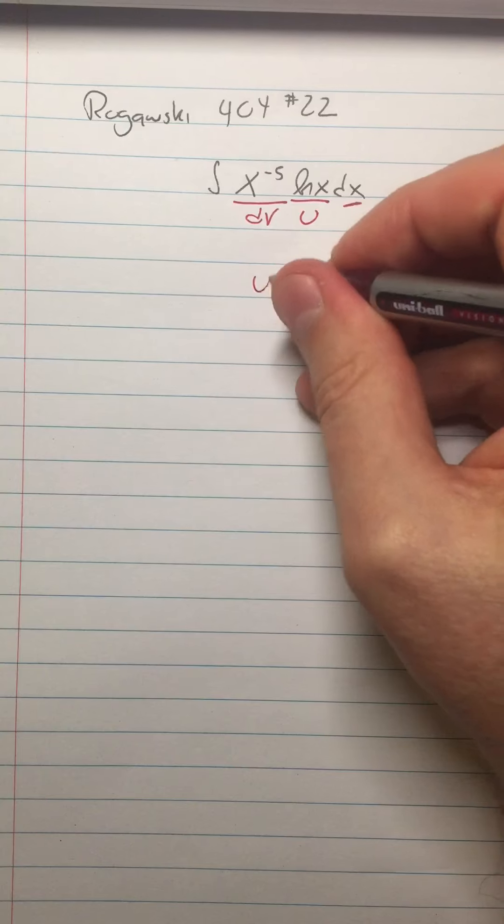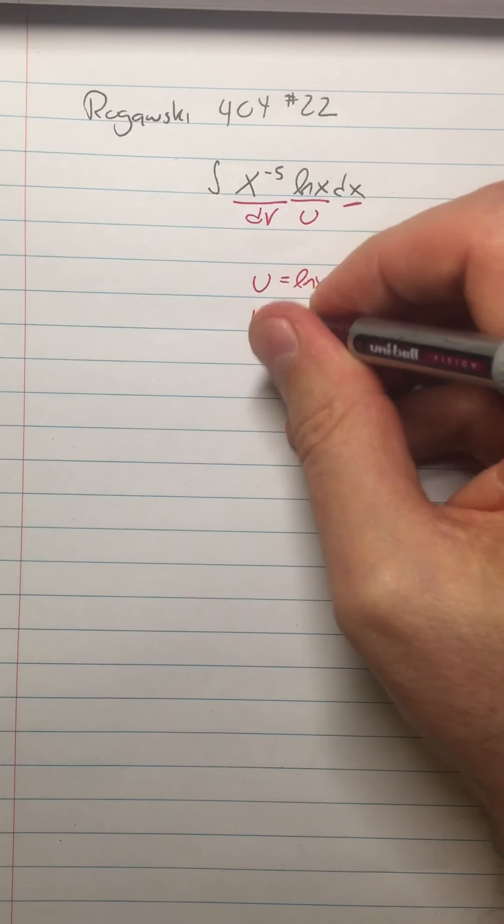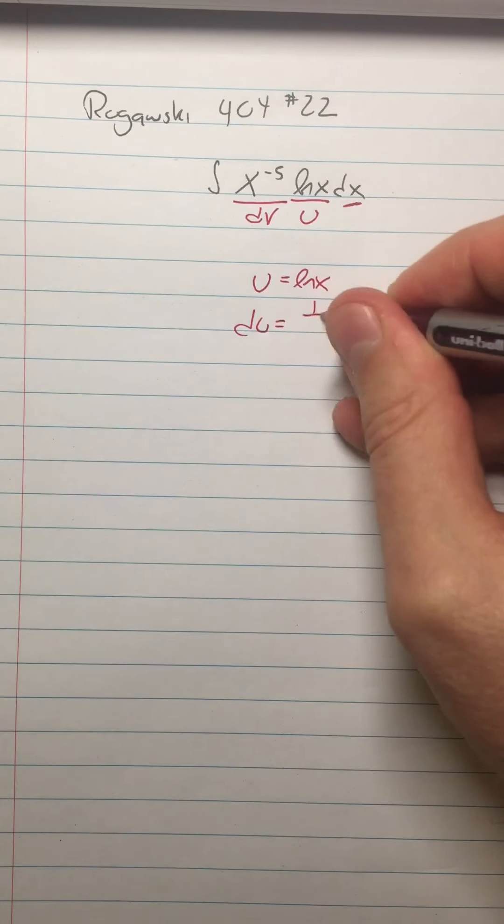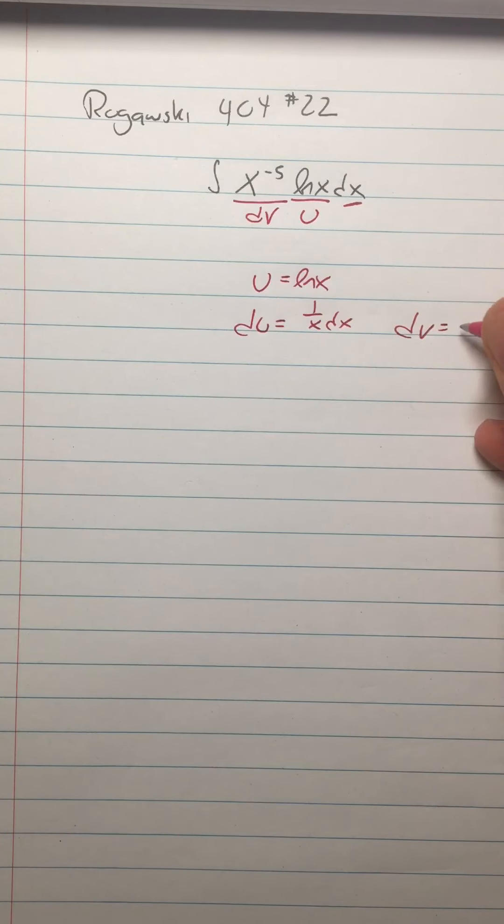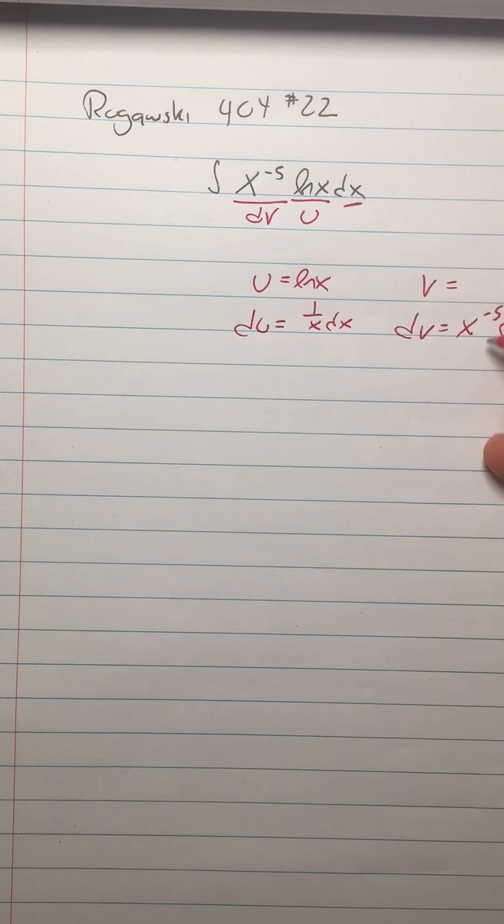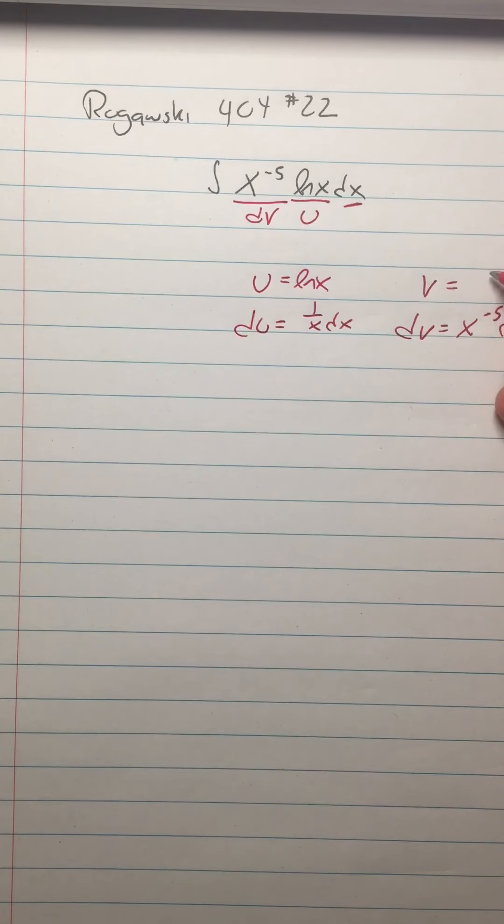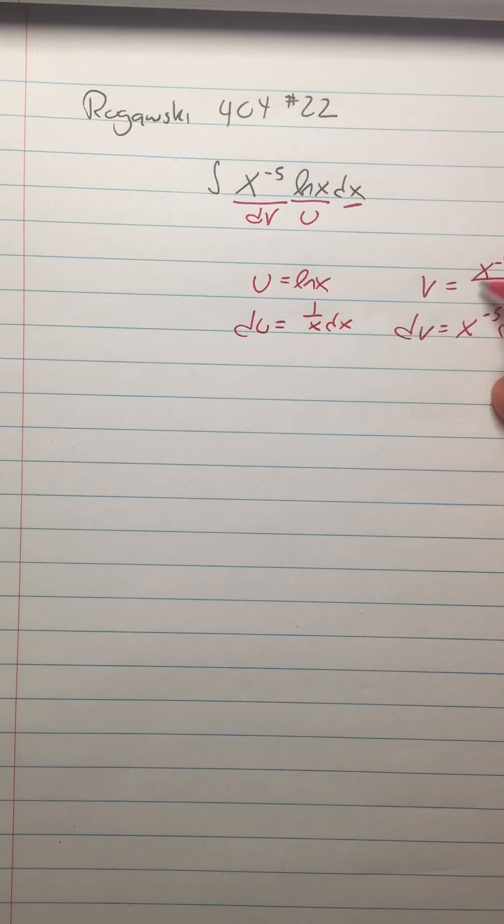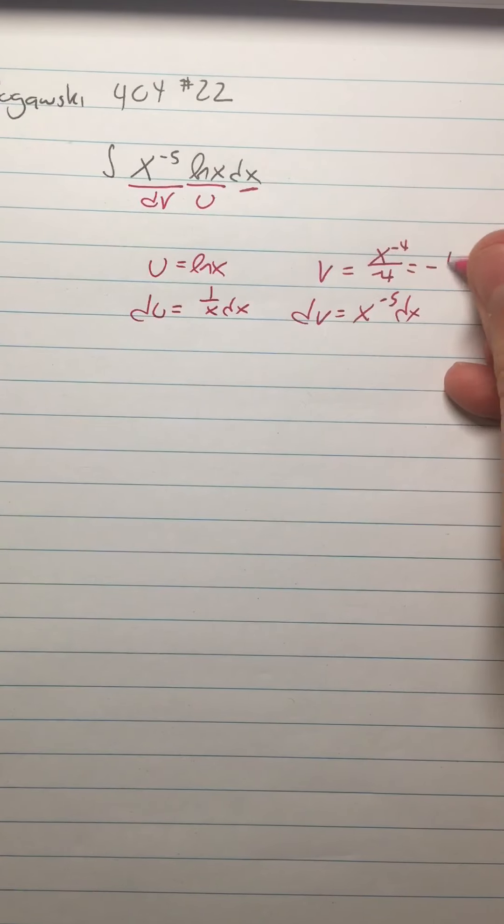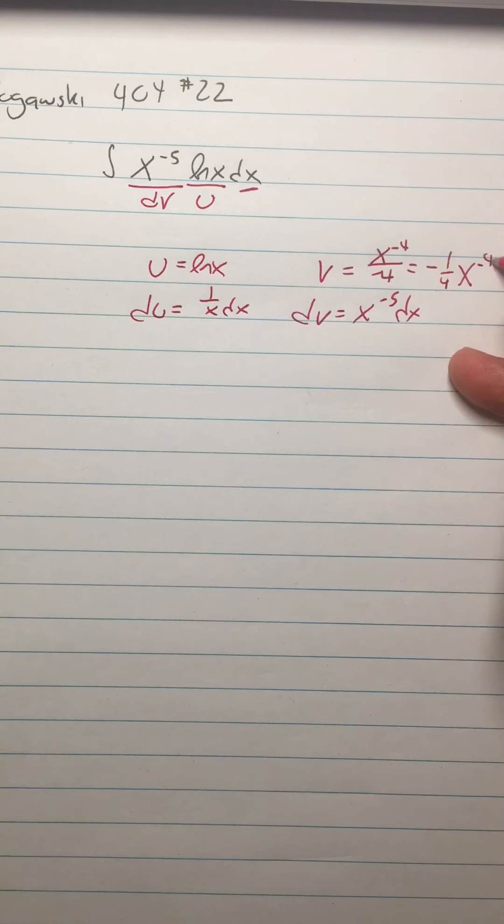So what we're saying is that u is ln x, du is one over x dx, dv is x to the negative fifth dx, and v is, well, I anti-differentiate this, so it's going to be raise the exponent one and get x to the negative fourth over negative four. So maybe nice to write that as negative one fourth x to the negative fourth.